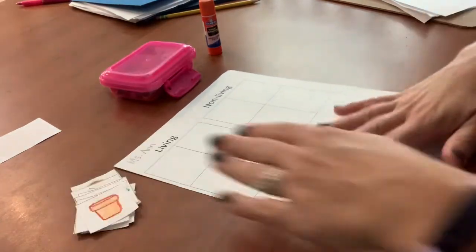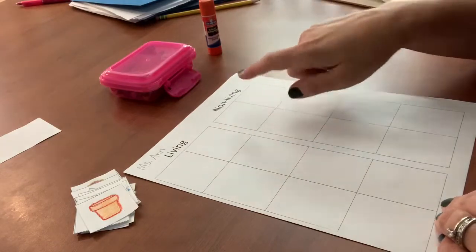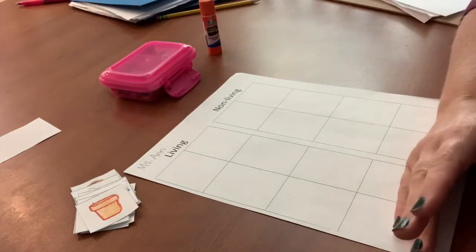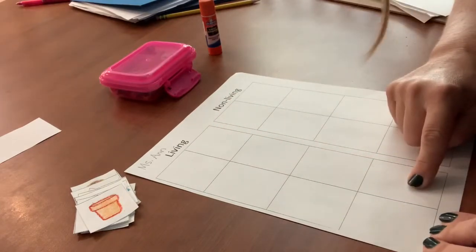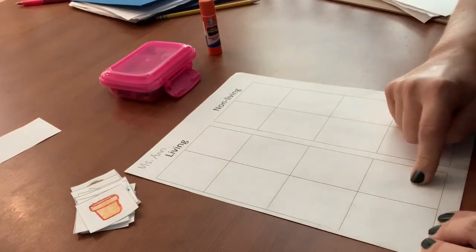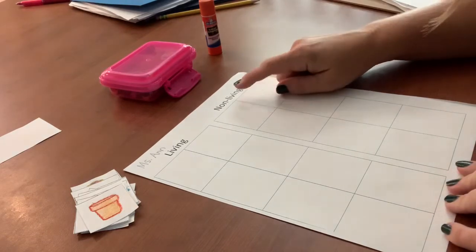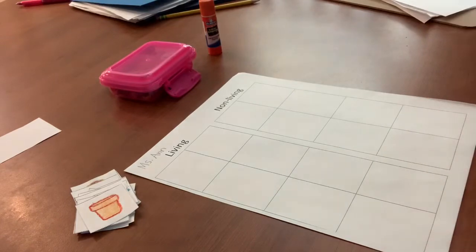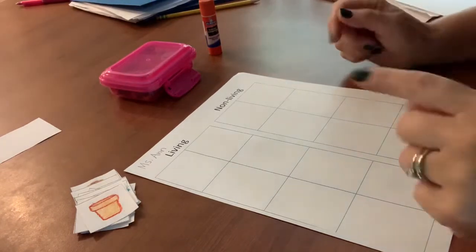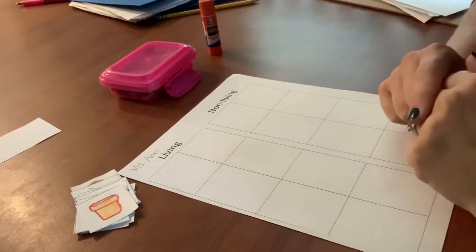Okay on your paper you can see that on the top it says living and non-living. So all of the pictures of things that are living are going to go in these spots. All of the things that are pictures of things that are not living or non-living will go in these spots. I'm going to do a few of them with you today and then I want you to think about the rest of them independently.